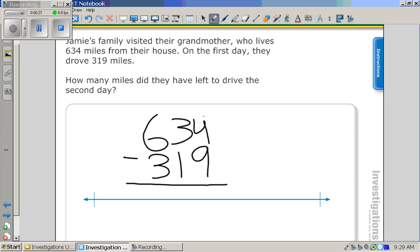First you cross out the 3, put a 2, because the next number, you can't do 4 minus 9.